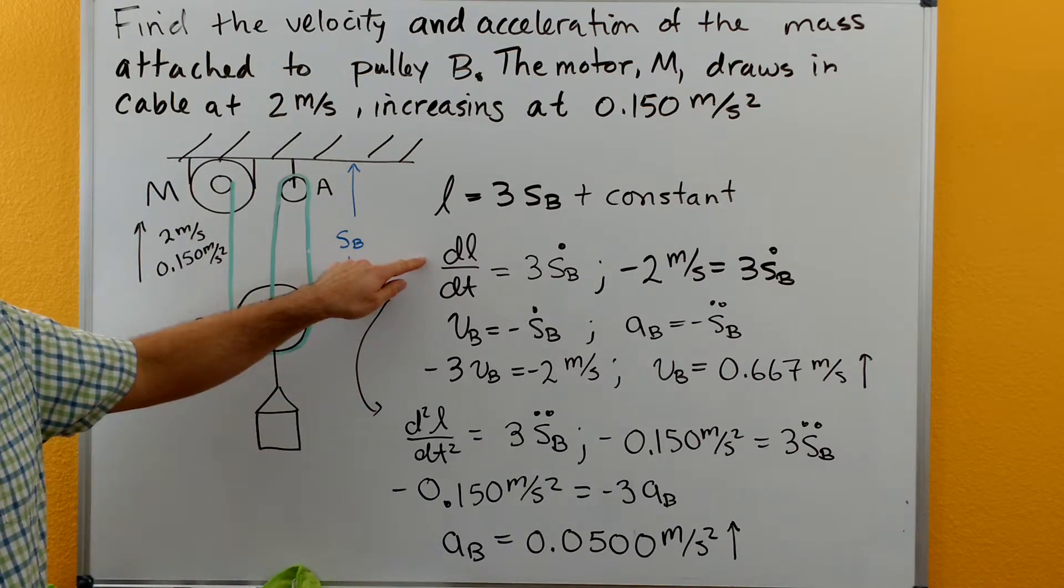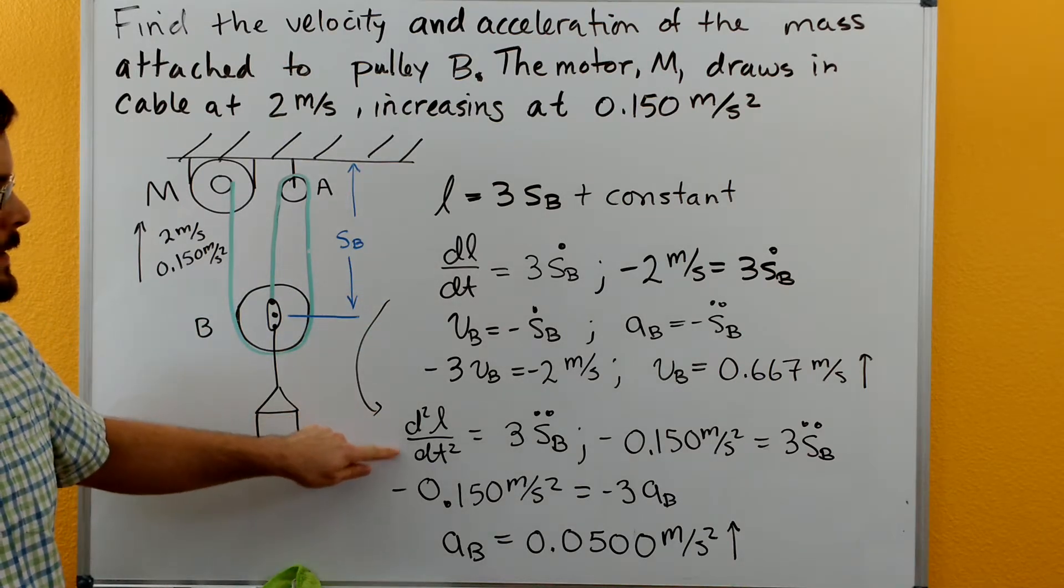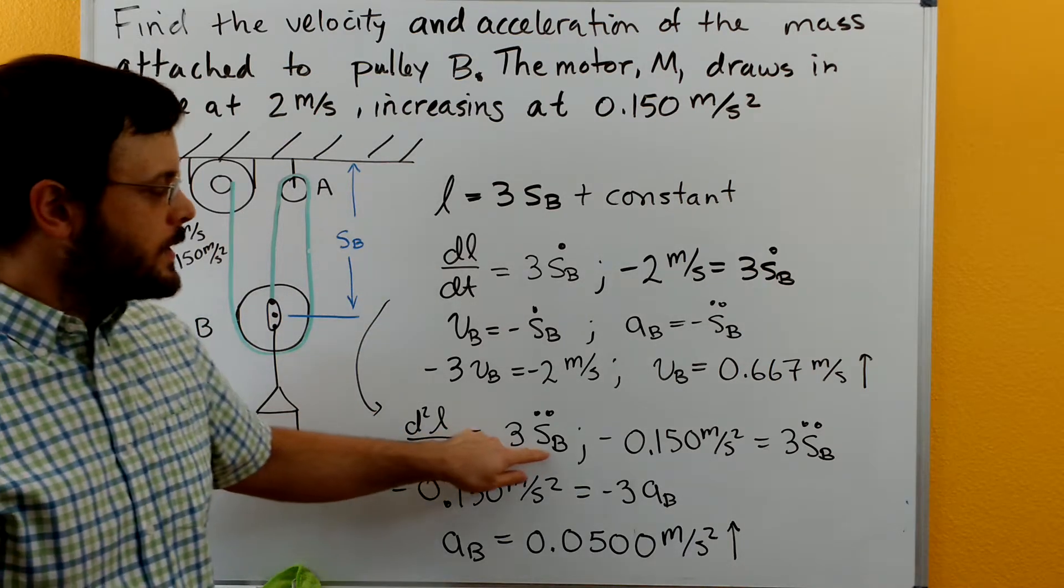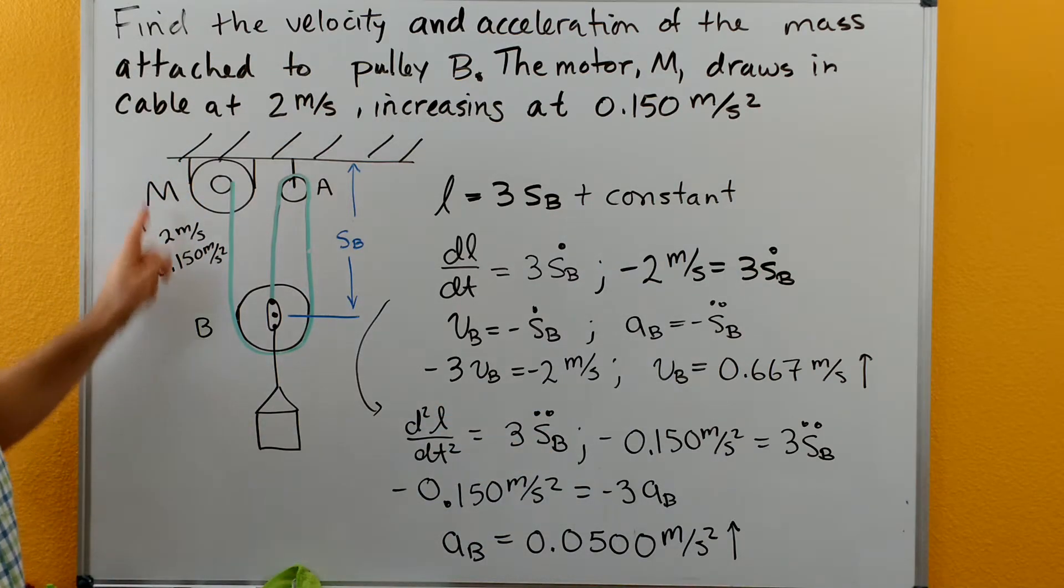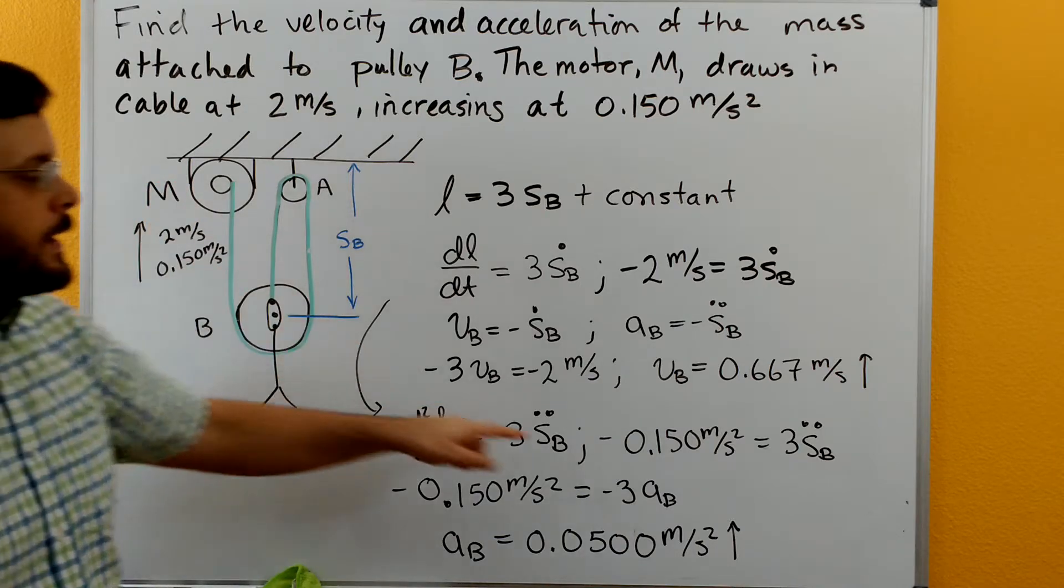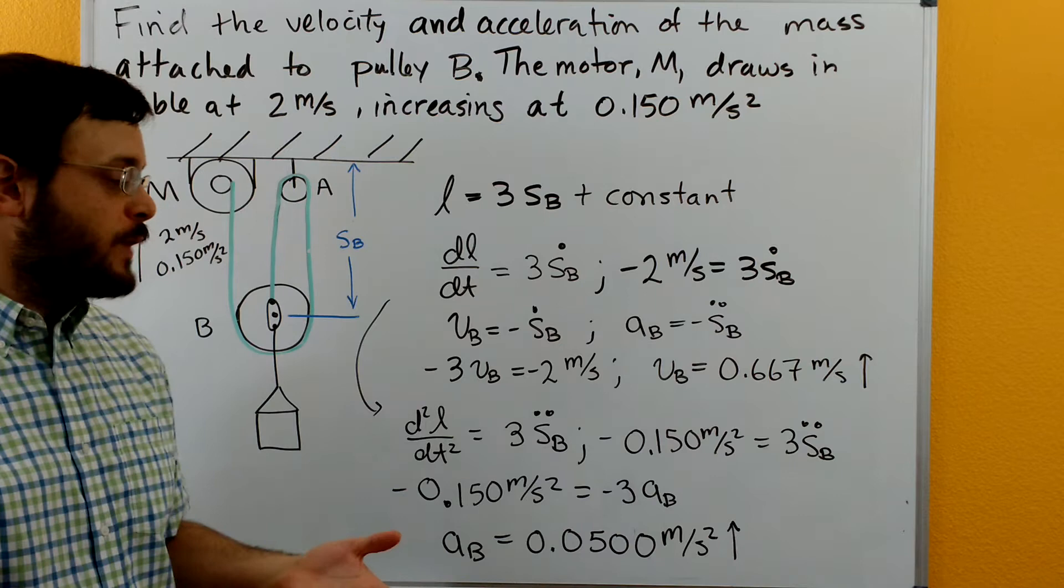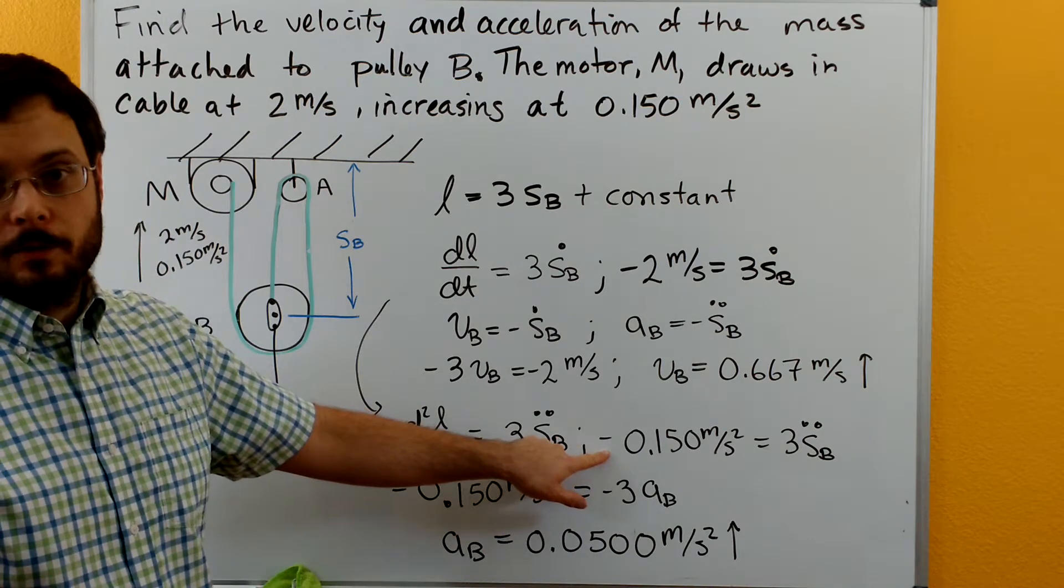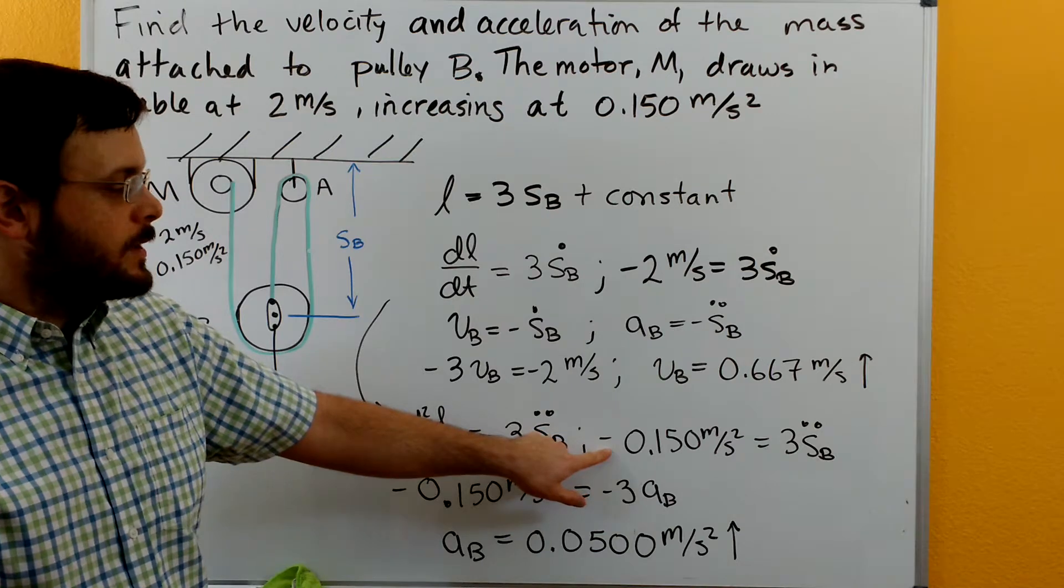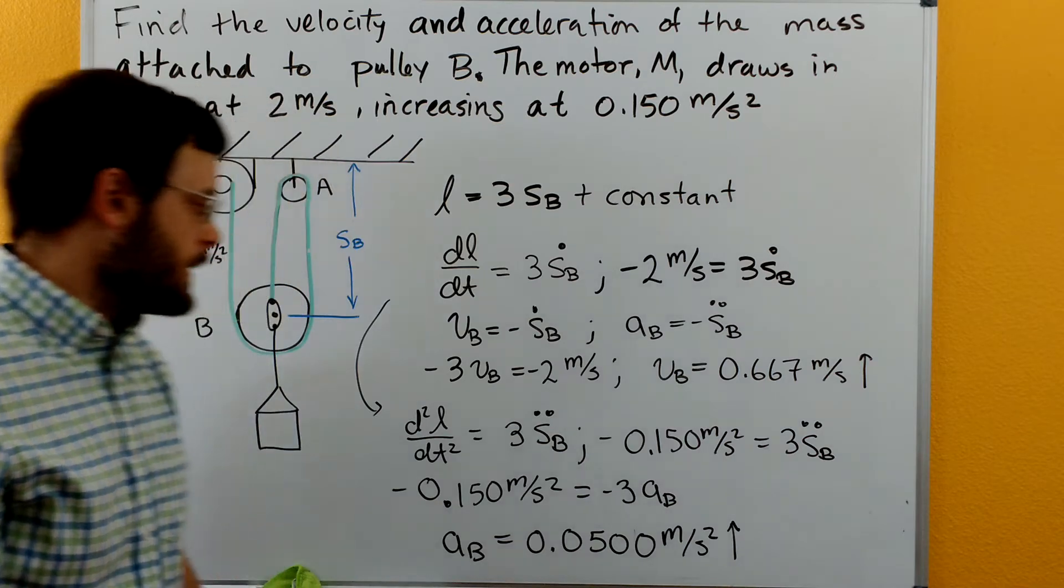We'll go back to our dL/dt and take a second derivative. So d²L/dt² equals three SB double dot. We know that the accelerated rate of change of this rope is 0.150 m/s². The motor is getting faster, so it's chewing up rope at an accelerated rate, so it's a negative sign in front of that value. That equals three SB double dot.